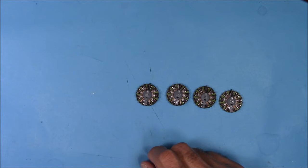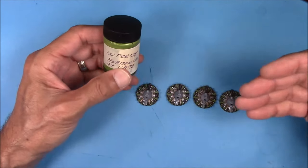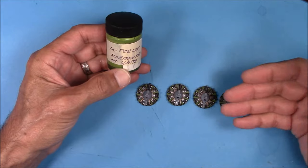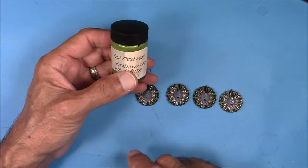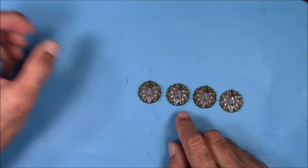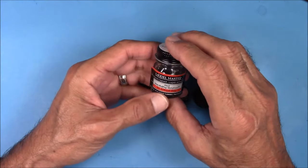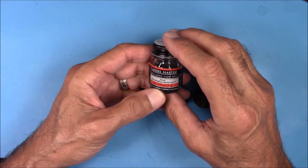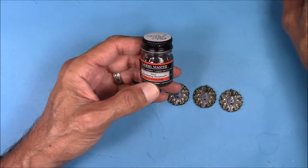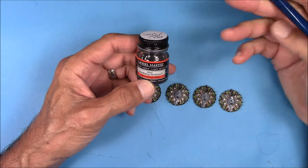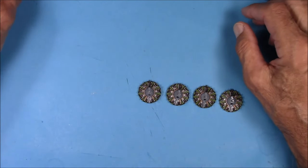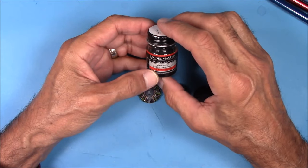So the gloss gray was first, then working from the bottom up and into the center, the zinc chromate green, and then the lower cylinder heads were done with model master non-buffing steel. And I used this brush for it. The tops of the cylinders got a gun metal.